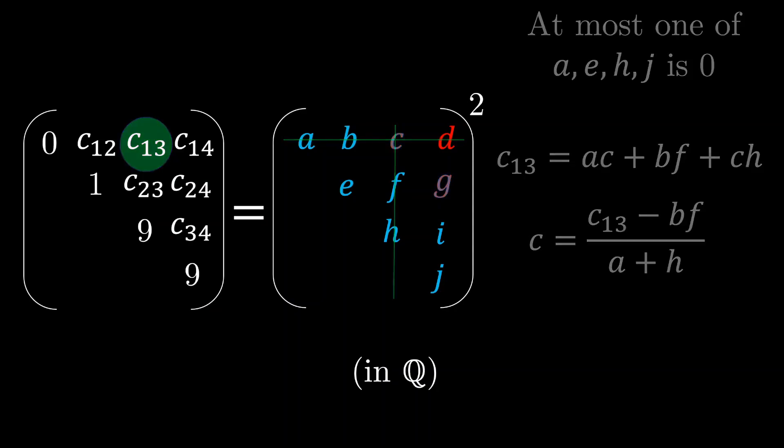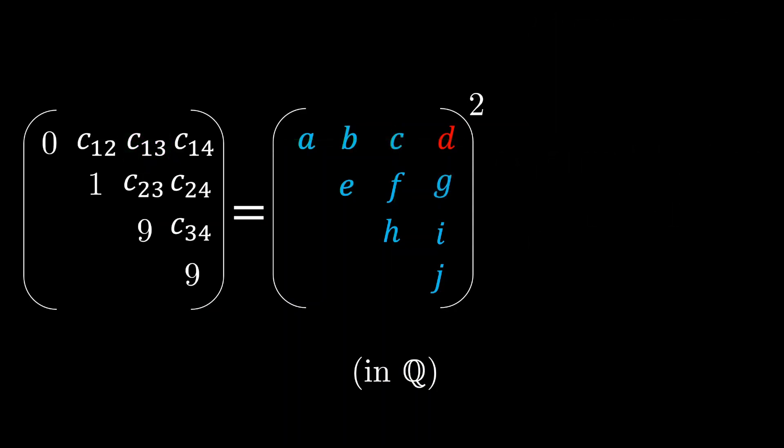Similarly, we can solve g. So we can solve for the next diagonal. And again, if we consider the next diagonal, we can solve d to be a rational number as well.